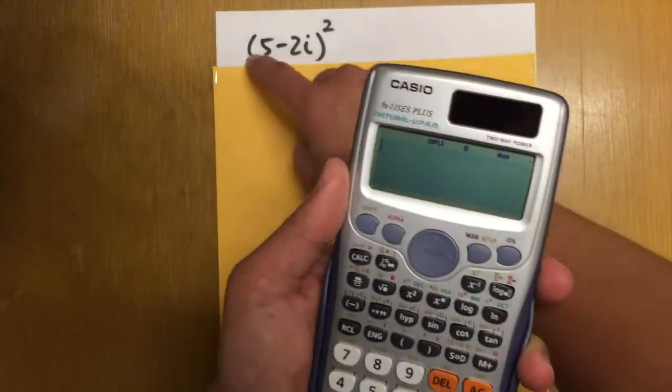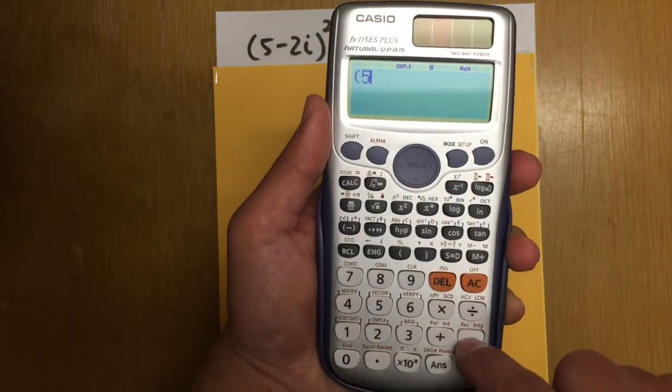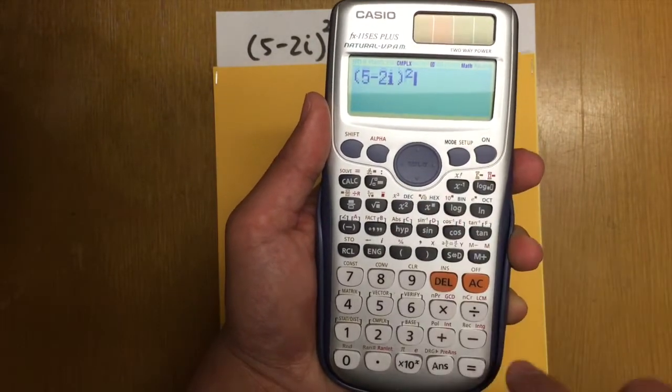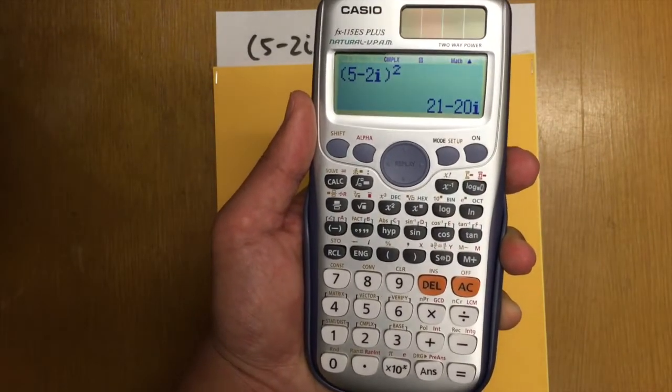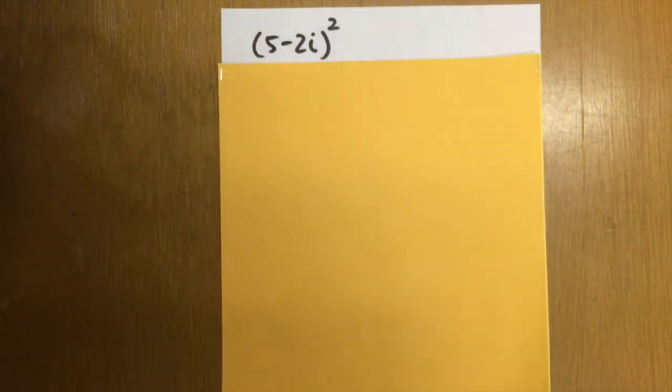So let me redo this. Parentheses 5. Use this for subtraction. Okay? So minus 2i close parentheses square. And then we have our answer. 21 minus 20i. Really, really cool.